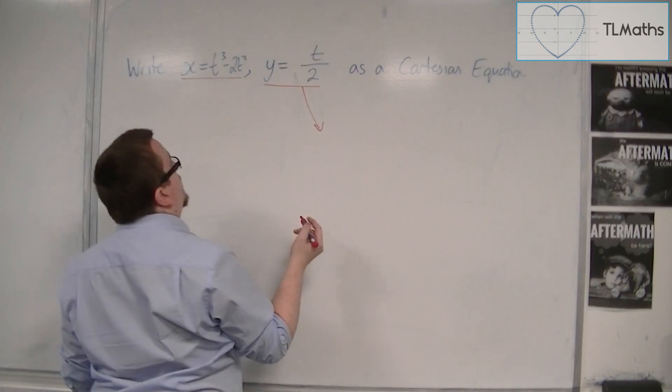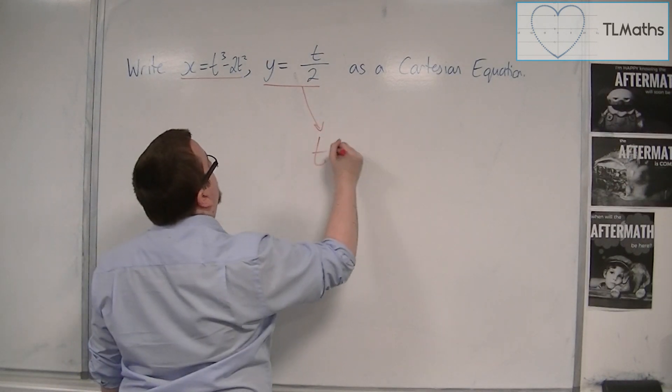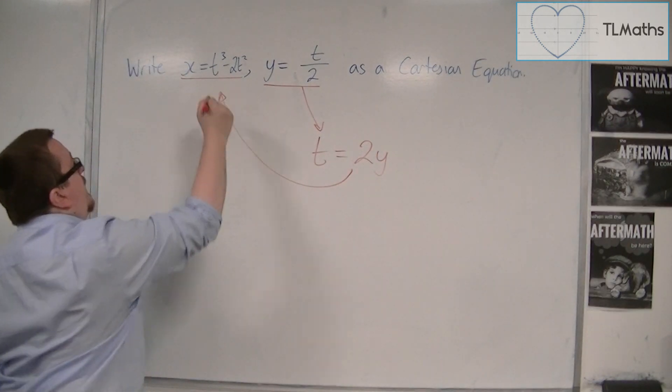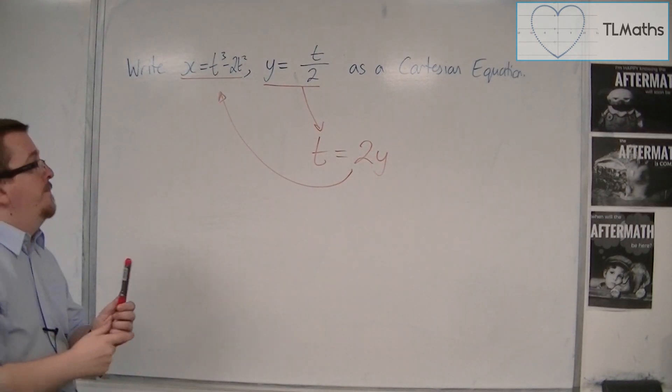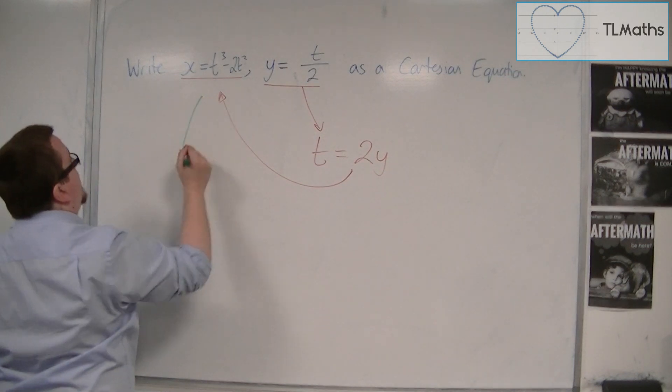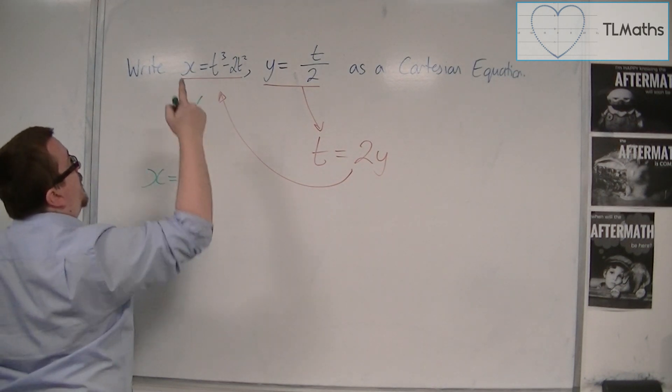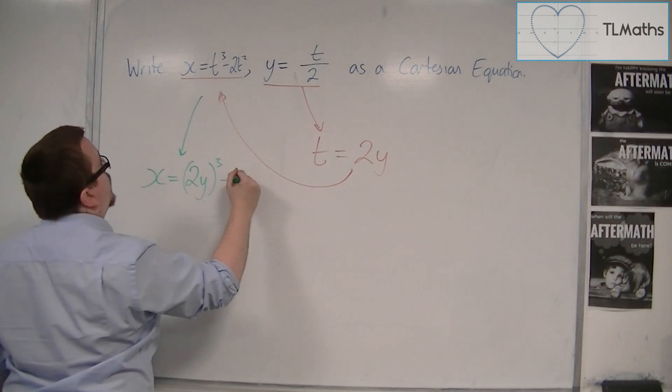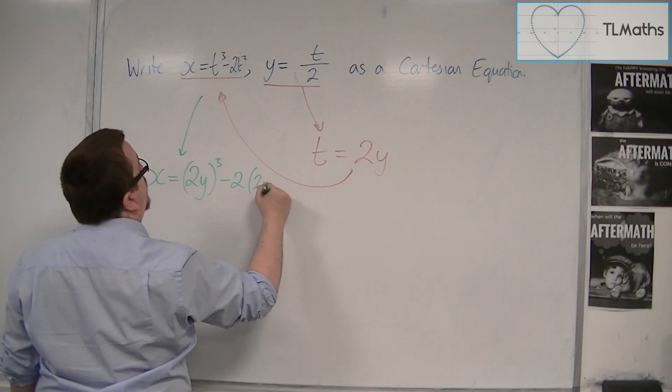We have to write y = t/2 as t = 2y, and then we're going to have to substitute that into the first equation. So we're going to get x = t³, so 2y cubed, take away 2 lots of 2y squared.